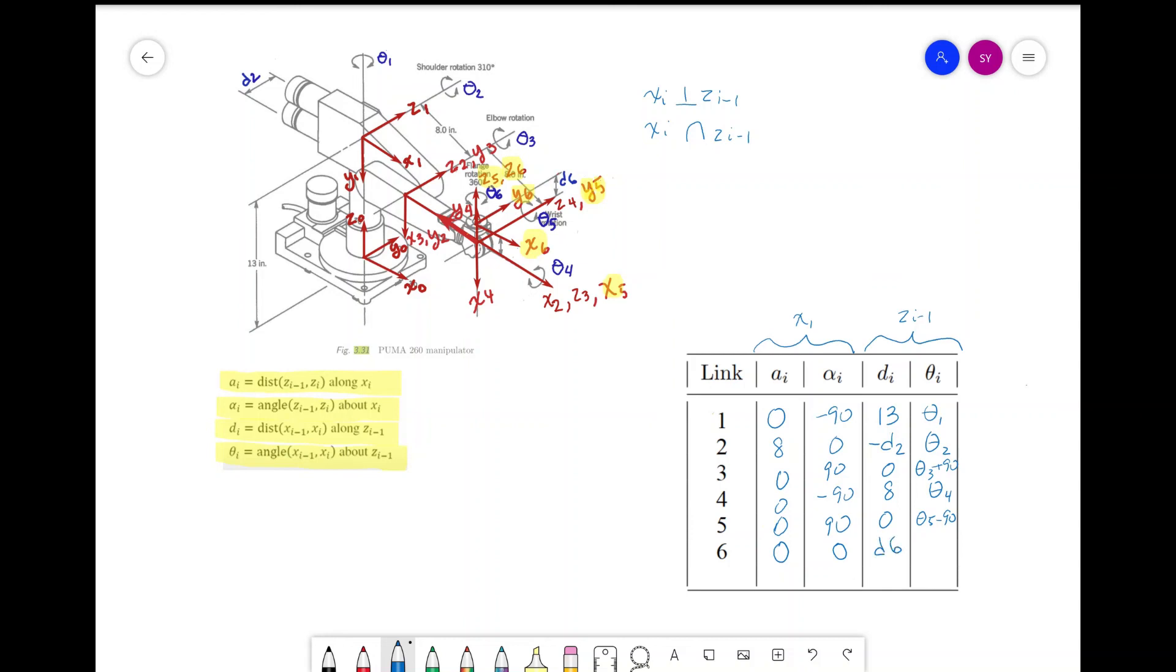And for theta_i, we see there's a theta_6 rotation for the joint, but there's no rotation needed to align the x-axis.